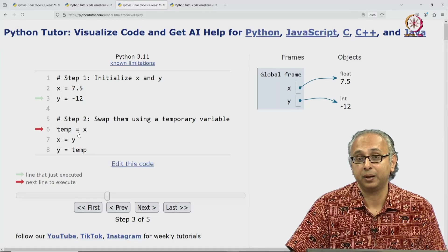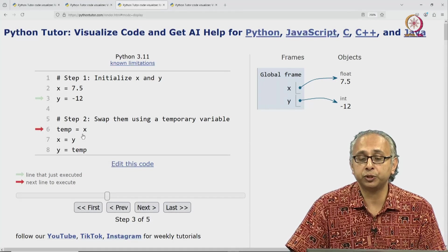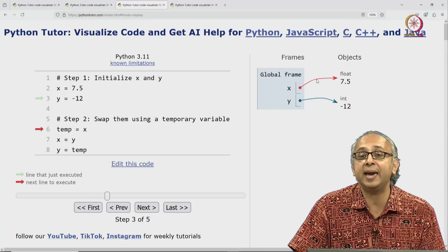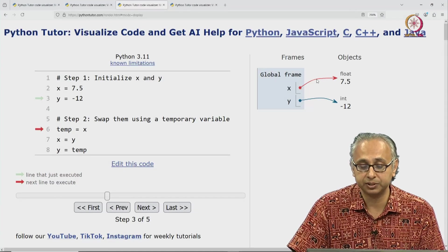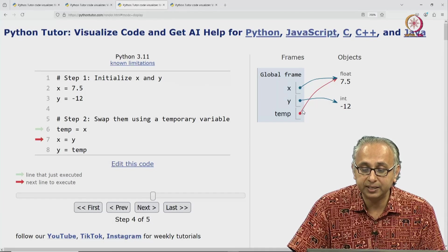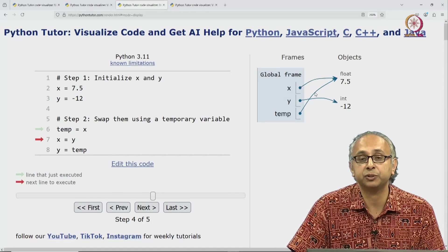Temp is equal to x. We know that this is just going to put another label, namely temp, on the object that x currently labels. So when we visualize this, you observe here is your temp and it is referring to the same object that x is referring to.